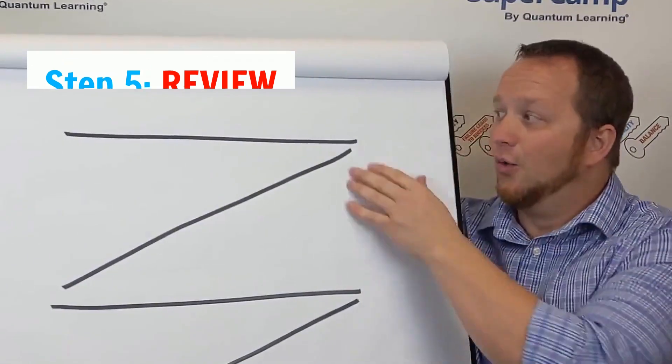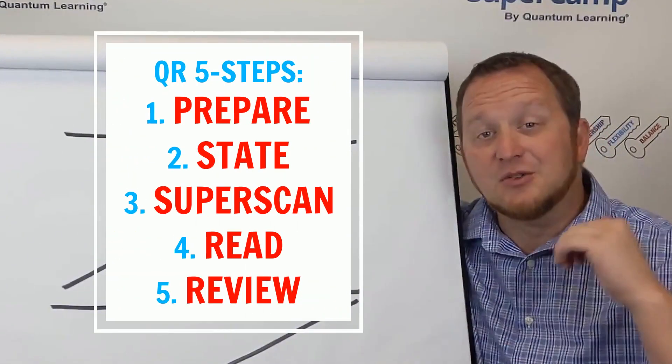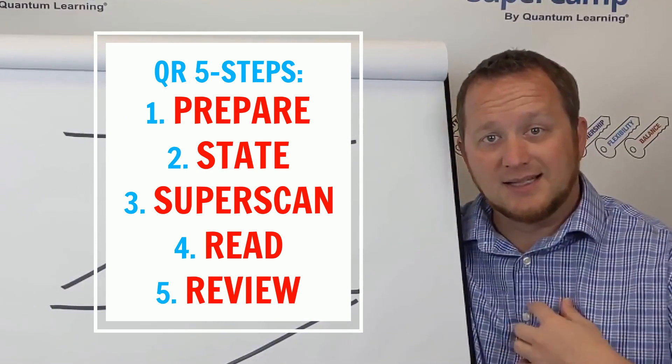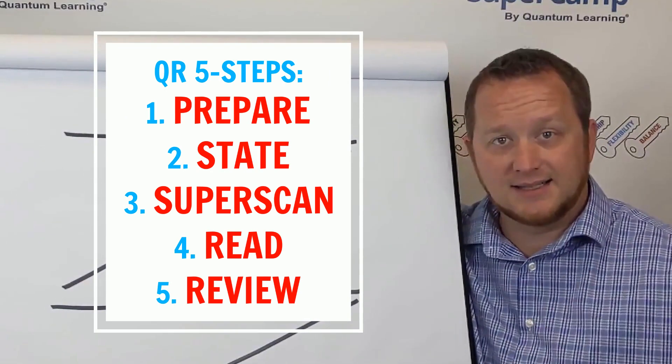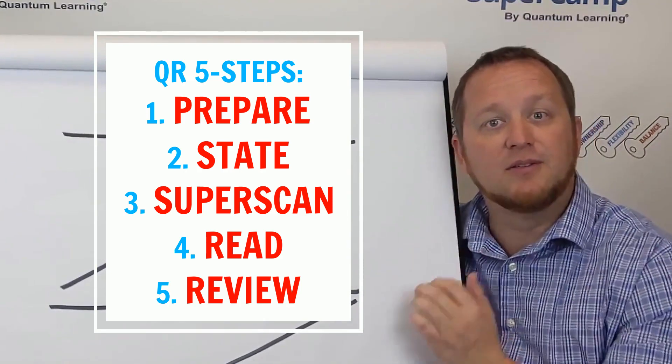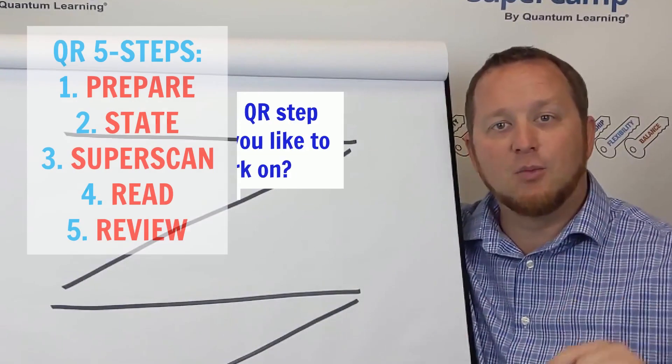Challenge for you is this. Which step in the quantum reading process do you really want to put some love and some attention to? For me, it's state because that's the one that I get distracted constantly. So think about where do you want to go? Prepare, state, super scan, read, review. Put it in the comments below. What do you want to work on?